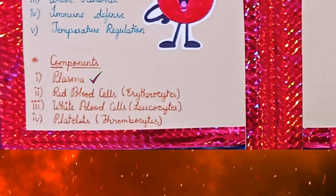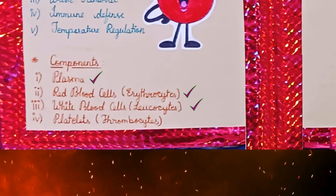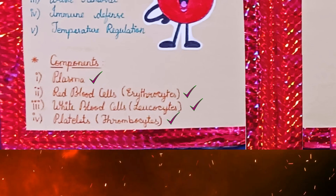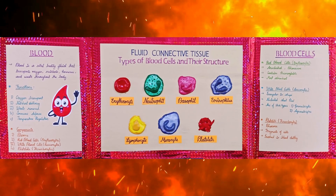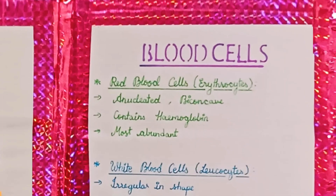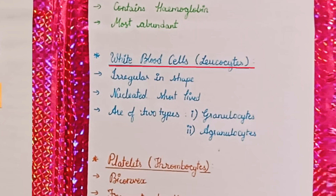Components of blood: Plasma; Red Blood Cells (Erythrocytes) — anucleated, biconcave, contain hemoglobin, most abundant; White Blood Cells (Leucocytes) — irregular in shape, nucleated, short-lived, and of two types: Granulocytes and Agranulocytes.